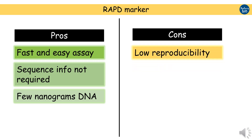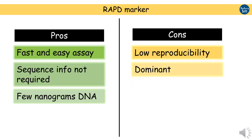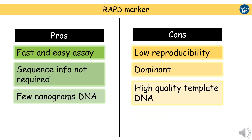First is low reproducibility — as the primers are short and annealing temperature is too low, non-specific amplicons can be produced and results may not always be reproducible. Second, RAPD are dominant markers, meaning they cannot distinguish between homozygous and heterozygous individuals. Third, high quality DNA is required, otherwise results may vary.